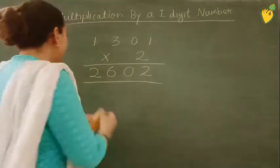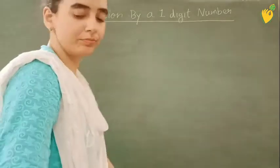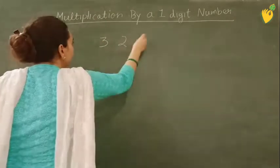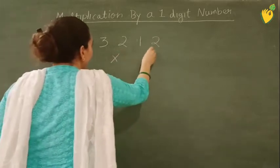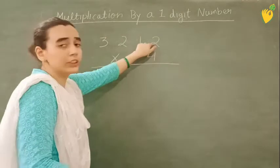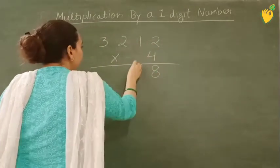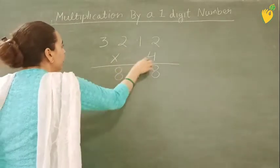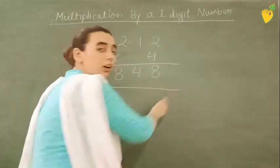Now another example I am writing. 3321 multiplied by 4. So 4 1's are 4. 4 2's are 8. 4 3's are 12.